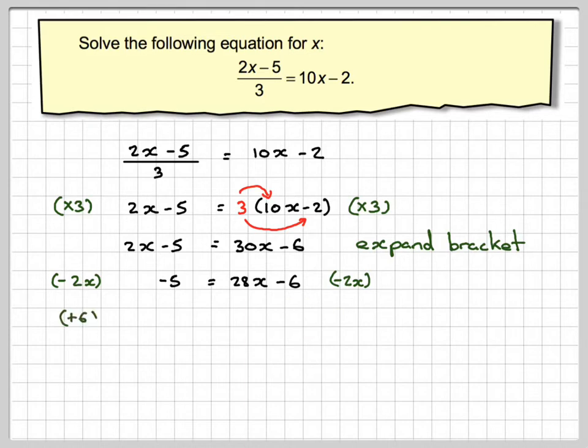Next step is to add 6 to both sides. So adding 6 to minus 5 gives me 1, and on this side we get 28x. Then finally, we've got 28 times x, so to find x we need to divide by 28 on both sides. So we're going to get x is equal to 1 over 28. The final answer is x equals 1 over 28.